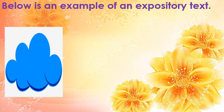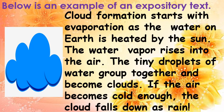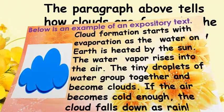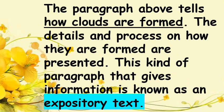Below is an example of an expository text. Cloud formation starts with evaporation as the water on the earth is heated by the sun. The water vapor rises into the air. The tiny droplets of water group together and become clouds. If the air becomes cold enough, the cloud falls down as rain. This paragraph tells how clouds are formed, and the details and process of how they are formed are presented. This kind of paragraph that gives information is known as an expository text.